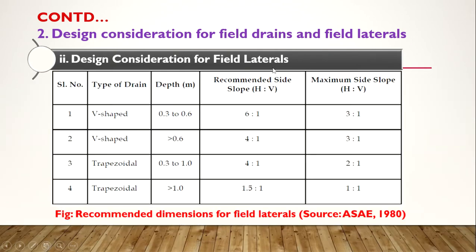These are the design considerations for field laterals. If they are V-shaped, their width or depth should be 0.3 to 0.6 meter and the side slope should be 6:1, with a maximum side slope of 3:1. Note that 6:1 means 6 horizontal to 1 vertical, which is a wider slope. If it is 3:1, the slope is steeper.